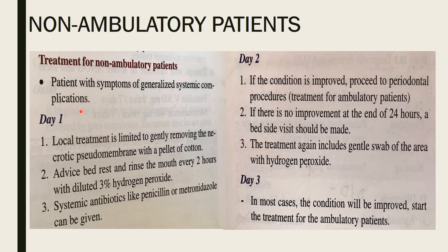For non-ambulatory patients, on Day 1: local treatment is limited to gently removing the necrotic pseudomembrane with a cotton pellet, advising bed rest, and asking the patient to rinse the mouth every two hours with diluted hydrogen peroxide. The key treatment to remember for ANUG is three percent hydrogen peroxide.